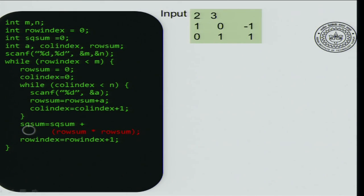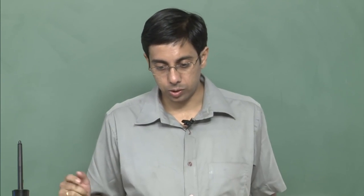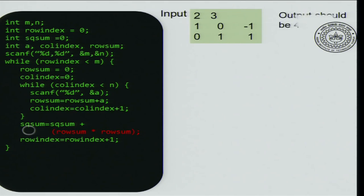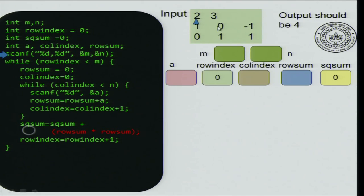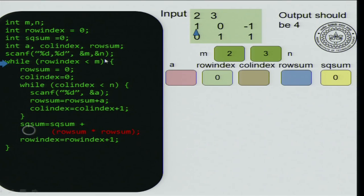Let us trace this on a small example. Suppose the input is 2 3, followed by two rows of three numbers each: entries are 1, 0, minus 1 and 0, 1, 1. The output should be 4 if done by hand. The variables are m, n, a, row index, column index, row sum, and square sum. We start with row index equal to 0, column index equal to 0, and scan m and n. So m becomes 2 and n becomes 3.